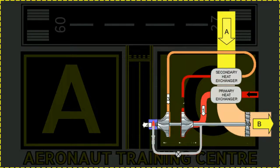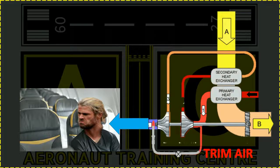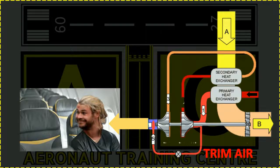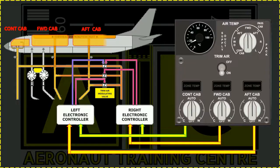Air from the packs is delivered at one constant, fairly cold temperature. This temperature is mostly unsuitable for the comfort of passengers and flight crew. Therefore some form of warmer air must be mixed into the conditioned pack air. This warm air is known as trim air because it trims the pack air temperature to make it more comfortable. The trim air pressure is regulated for the flight deck, forward passenger cabin and aft passenger cabin.